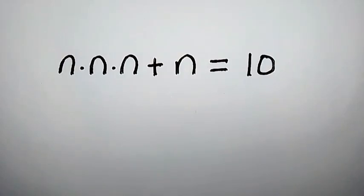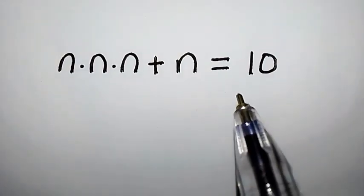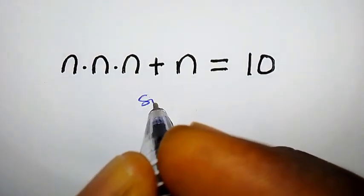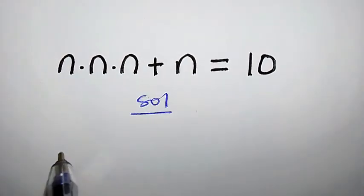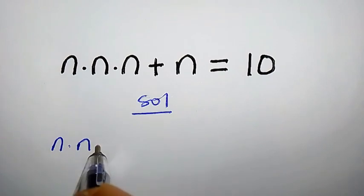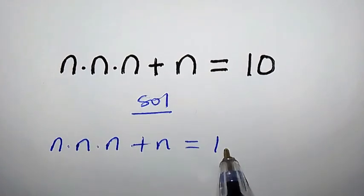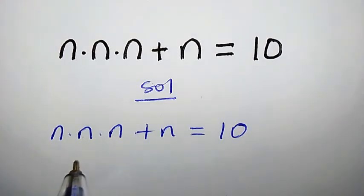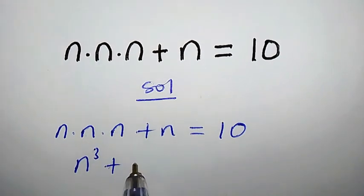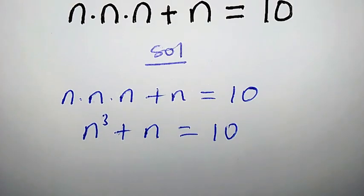Hello, welcome back. n times n times n plus n equals 10 — how do we solve for n? Without further delay, let's begin. We have n times n times n plus n equal to 10. n times n times n is n to the power of 3, so we have n³ plus n equals 10.